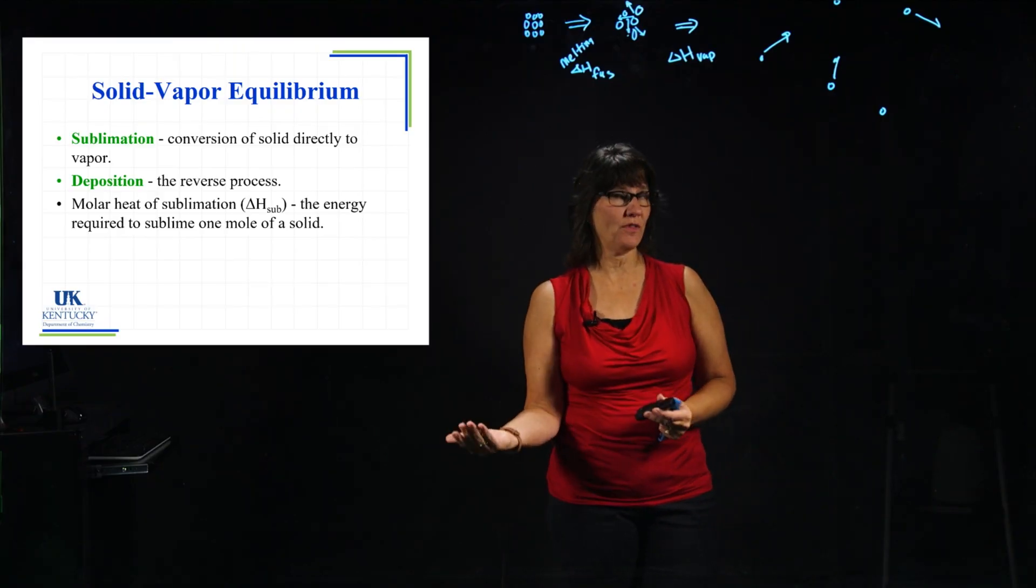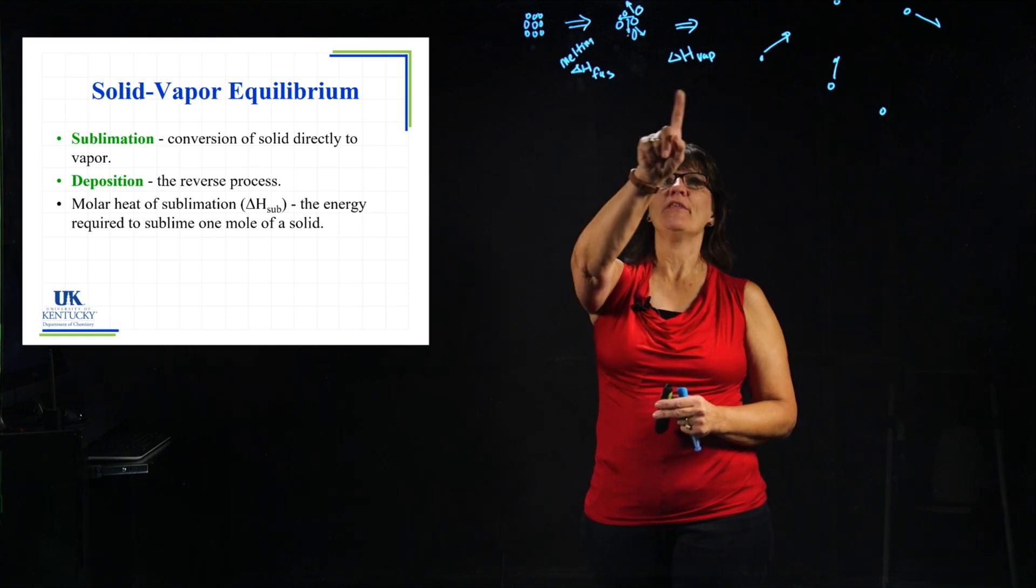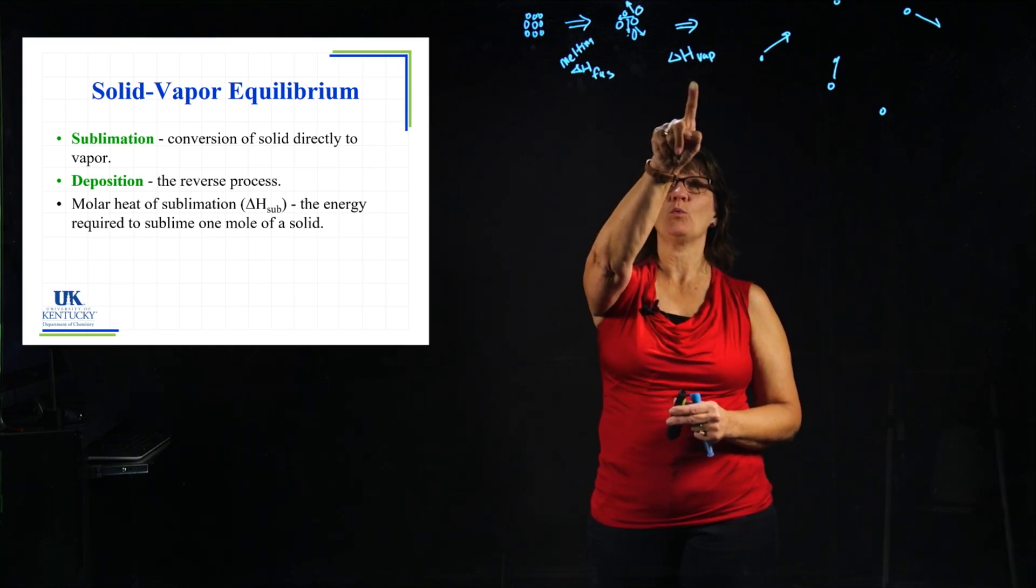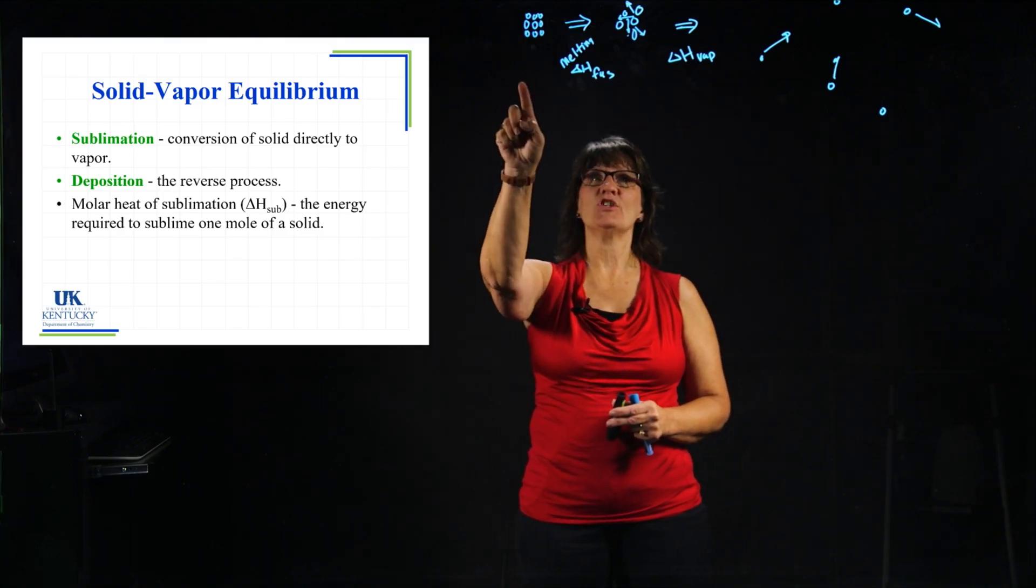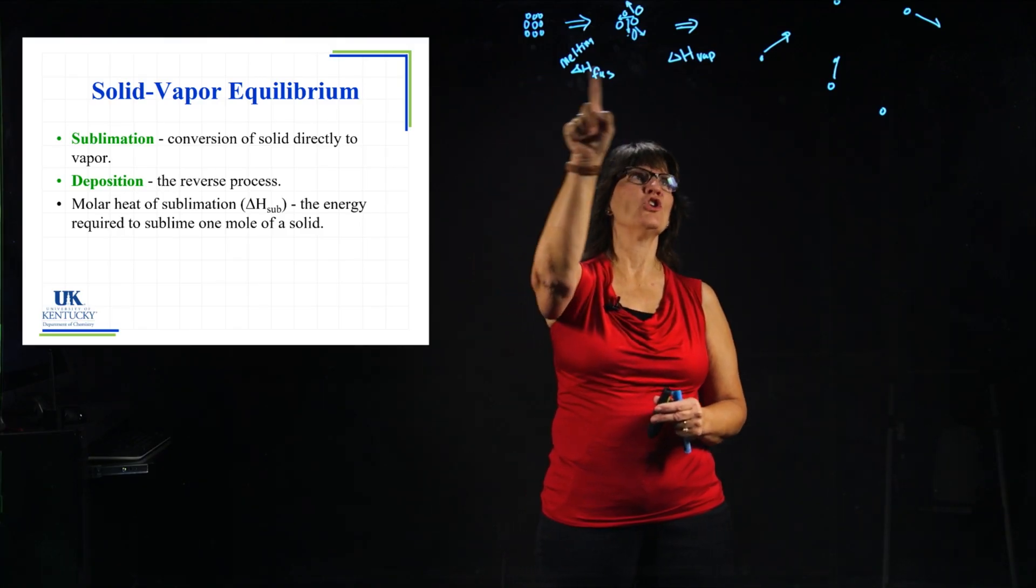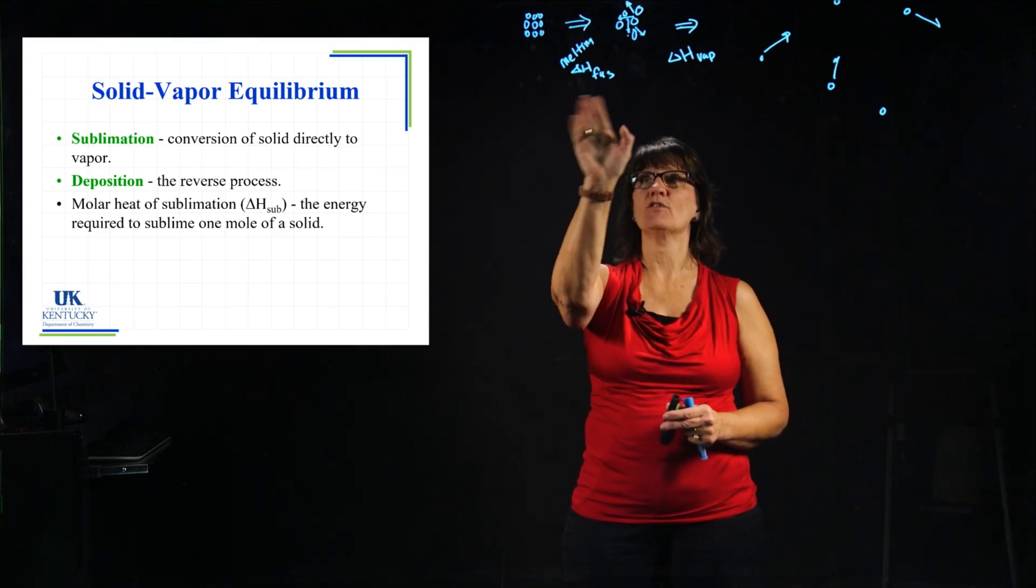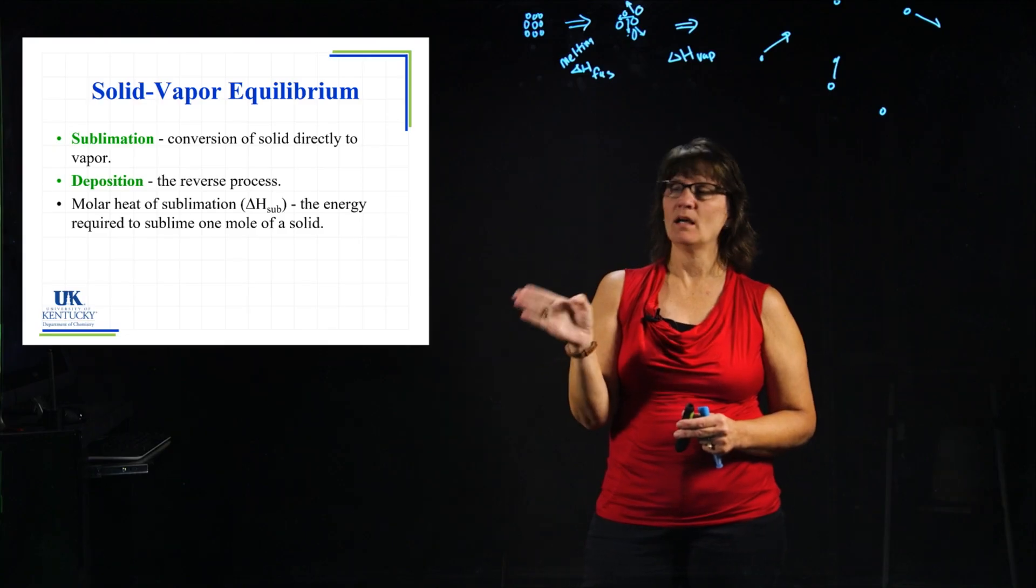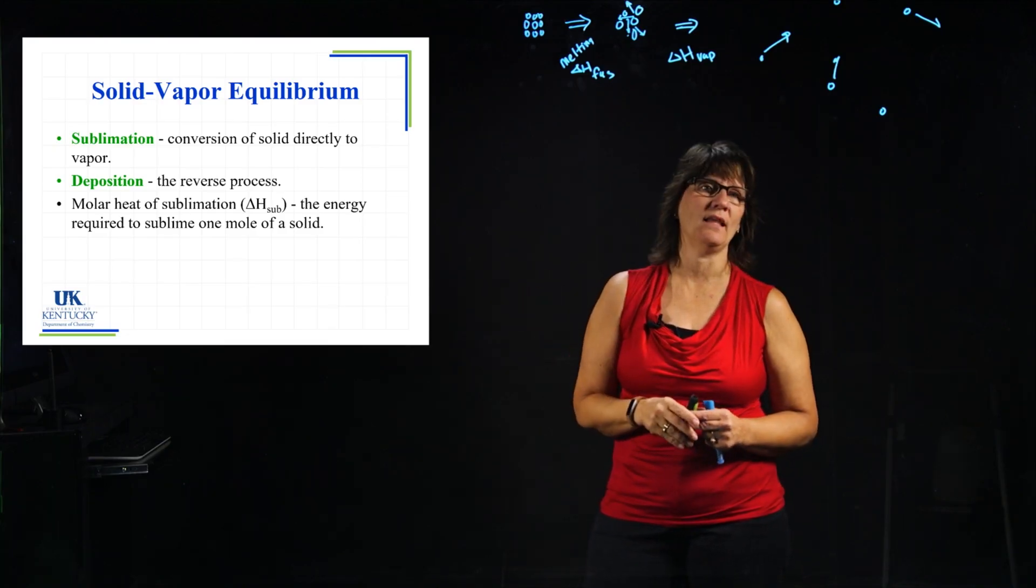Now, there is an energy associated with this. If there's an energy associated with melting, and there is an energy associated with going into the gas phase, there is an energy associated with going from here straight to here and bypassing that all together. All right, so that would be the molar heat of sublimation, delta H sub as it's abbreviated there.